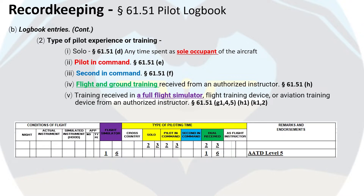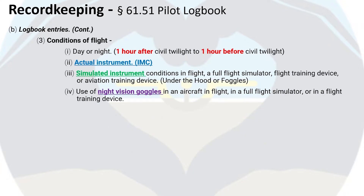Here's an example of logbook entries in this section with relevant columns highlighted. The last section of the logbook entries covers the conditions of flight. You must log whether it's day or night — night time is considered one hour after civil twilight to one hour before civil twilight — actual instruments, which means time flown in actual instrument meteorological conditions or IMC, simulated instrument conditions using foggles or under the hood, and the use of night vision goggles.